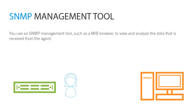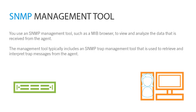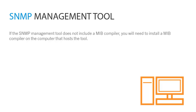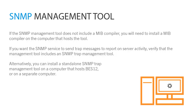You use an SNMP management tool, such as a MIB browser, to view and analyze the data that is received from the agent. The management tool typically includes an SNMP trap management tool that is used to retrieve and interpret trap messages from the agent. If the SNMP management tool does not include a MIB compiler, you will need to install a MIB compiler on the computer that hosts the tool. If you want the SNMP service to send trap messages to report on server activity, verify that the management tool includes an SNMP trap management tool. Alternatively, you can install a standalone SNMP trap management tool on a computer that hosts BES-12 or on a separate computer.